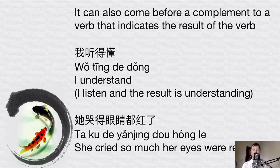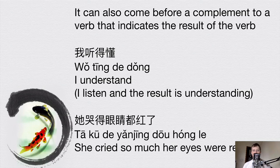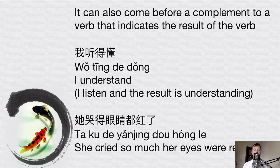A very common example you might have heard as a beginner is 我听得懂 or 我听不懂. 我听得懂 means 'I understand.' Literally: 我 is 'I,' 听 means 'listen' or 'hear,' 得 means 'and the result is,' and 懂 means 'understand.' In simple English it's just 'I understand.' You might also have heard 我听不懂 — 'listen, not understand' — meaning 'I can't understand.' The negative form uses 不 in place of 得.